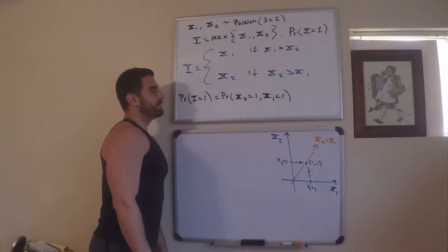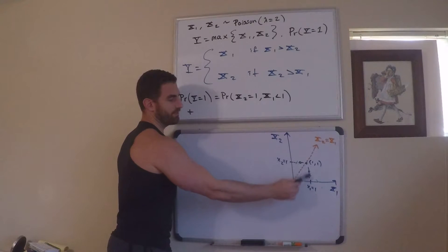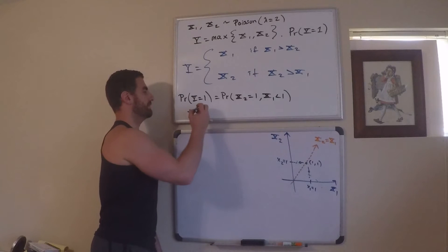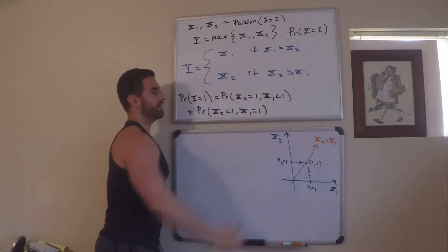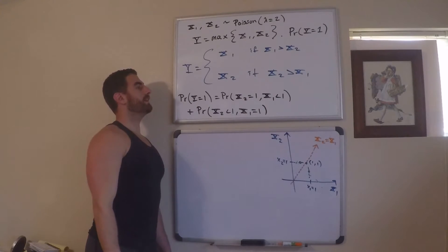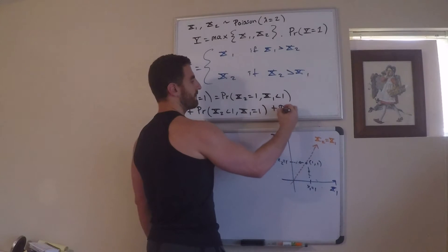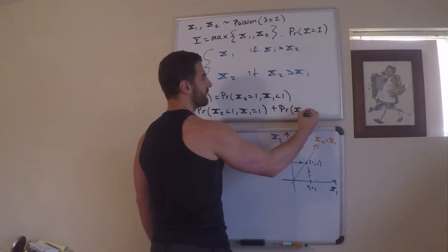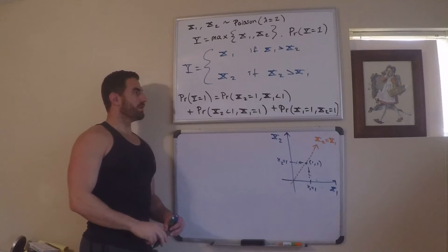Now, I want to add that to the place where, let's do the vertical line now. Now, this is where x1 is equal to 1 and x2 is going to be less than 1. So, this is the probability where x2 is less than 1 and x1 is equal to 1. And finally, we could have a situation where they're equal, they're both equal to 1. So, plus the probability where x1 is equal to 1 and x2 is equal to 1.